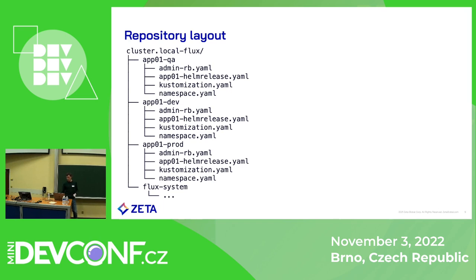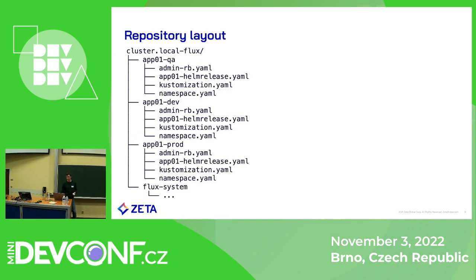System components — like ingress controllers, Prometheus Operator, everything that isn't an application — each get only one namespace named after the system component. We have a separate staging cluster to test upgrades and changes to system components before applying them to production clusters. We also have certain namespaces where engineers prefer to manage their manifests from their own repositories. In that case the namespace definition is still present in our repository, but we delegate management of the remaining objects to another team's repository using Kustomization and GitRepository resources.